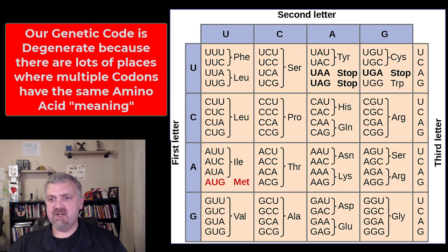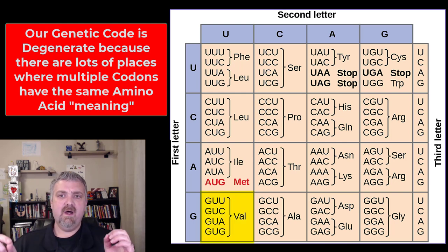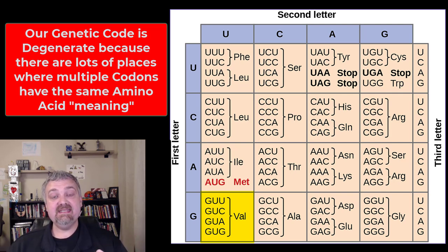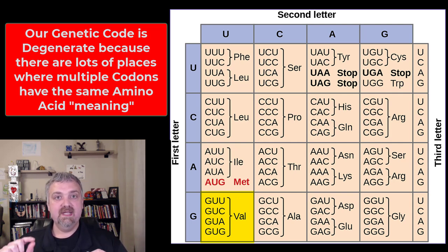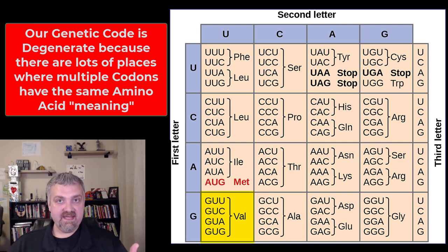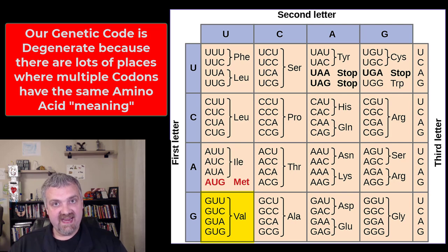Before we're done, let's review degeneracy. To say your code is degenerate sounds terrible, but it means you can handle some mutations without causing any problems — that's a silent mutation. For example, the codons GUU, GUC, GUA, and GUG all code for valine. So if a point mutation turned GUU into GUC, it wouldn't cause any problems because you'd still place valine in the right spot in that protein. That's why it's called a silent mutation.